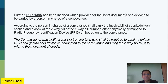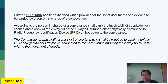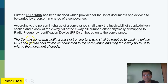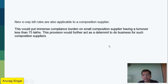Under Rule 138A, the documents or devices required are: either the invoice, bill of supply, or delivery challan along with the e-way bill — either physically or mapped to RFID. The Commissioner can classify a class of transporters who are required to obtain a unique RFID. These rules are also applicable to composition suppliers. The threshold is 75,000 or 50,000 depending on the category.